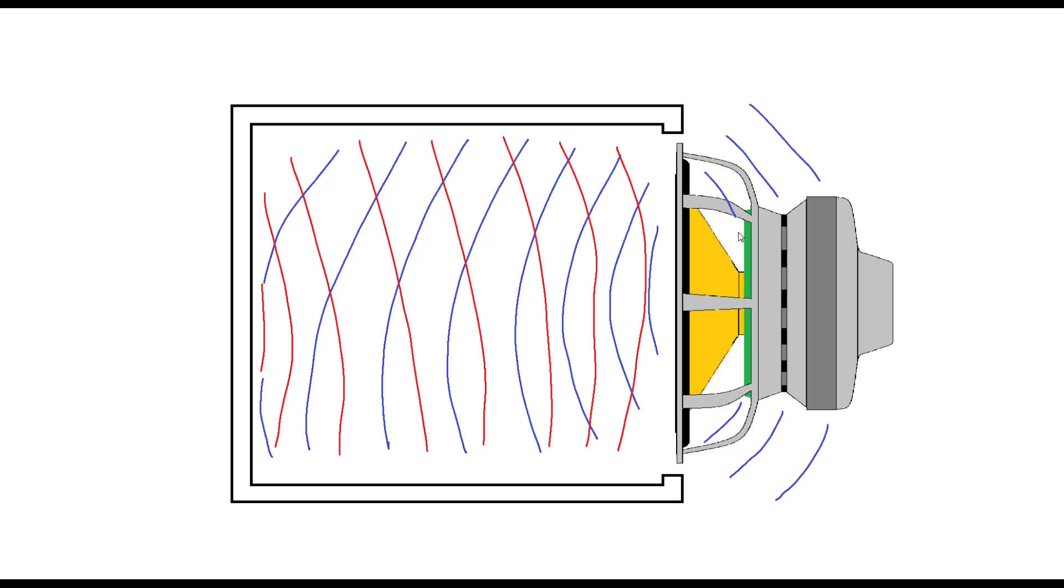Another thing is waves that travel out of the rear of the speaker towards the listener are heavily obstructed by the magnet system which can also reduce definition and imaging which is when you can tell where the sound is coming from on a stereoscopic stage.